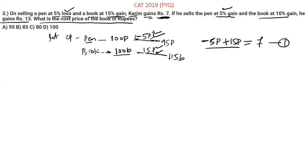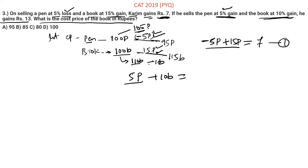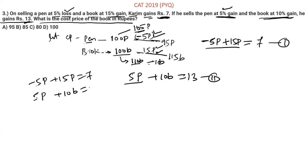He sells the pen at 5% gain, so the gain is 5P. The book at 10% gain gives 10B. So 5P plus 10B equals 13. This is equation 2. Subtracting equation 1 from equation 2: the 5P terms cancel out, giving 25B equals 20.